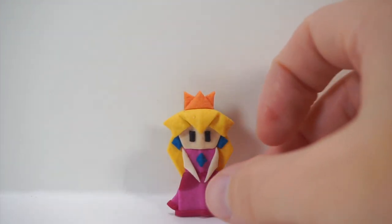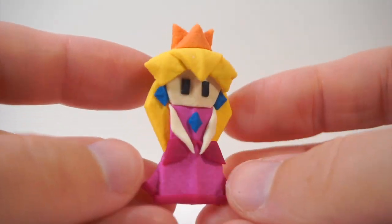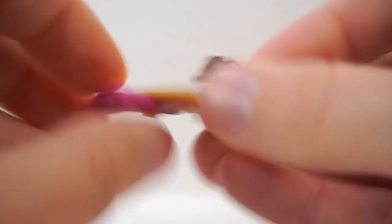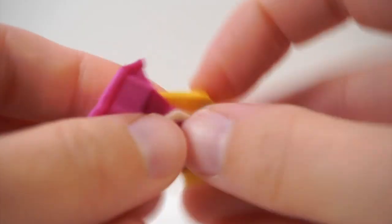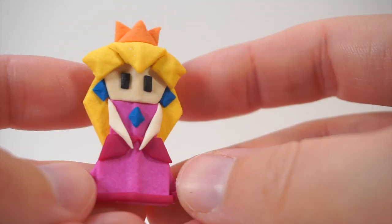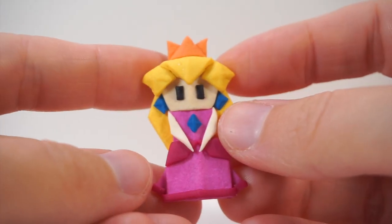And there she is, the finished paper Princess Peach origami pin made out of polymer clay. Since she is fimo leather, she is flexible so she is more durable, which is really cool. I'm excited to play more with it and I hope y'all enjoyed this project.